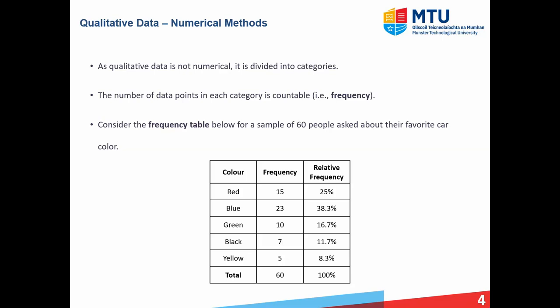Let's first look at the numerical methods used to describe qualitative data. As qualitative data isn't numerical — it's names — we can't calculate quantities such as the mean and standard deviation. But we can divide it up into categories, then count up the number of data points that fall into each of those categories, and this is the frequency.